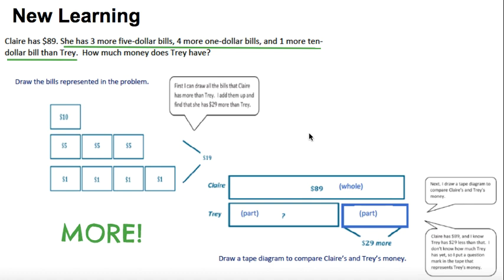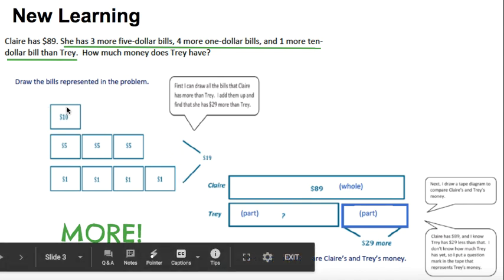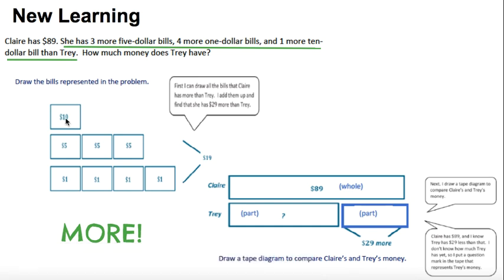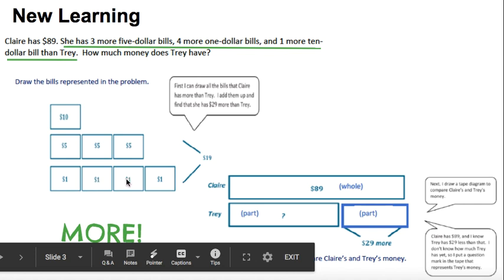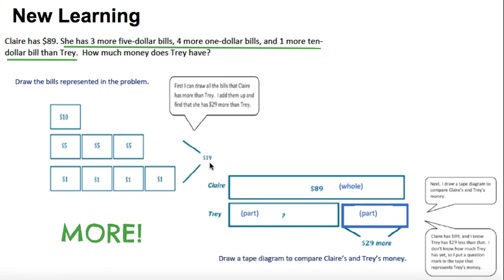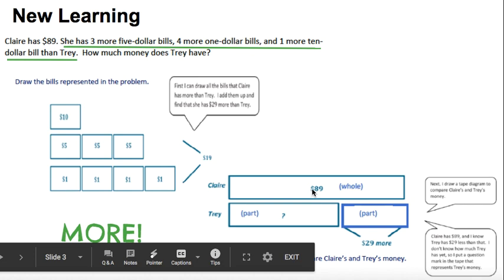They drew it for you right here. Now let's count it and see if you notice an error in the packet: 10, 15, 20, 25, 26, 27, 28, 29. They wrote 19 in the packet, but we know that when you add them up, Claire has $29 more than Trey.